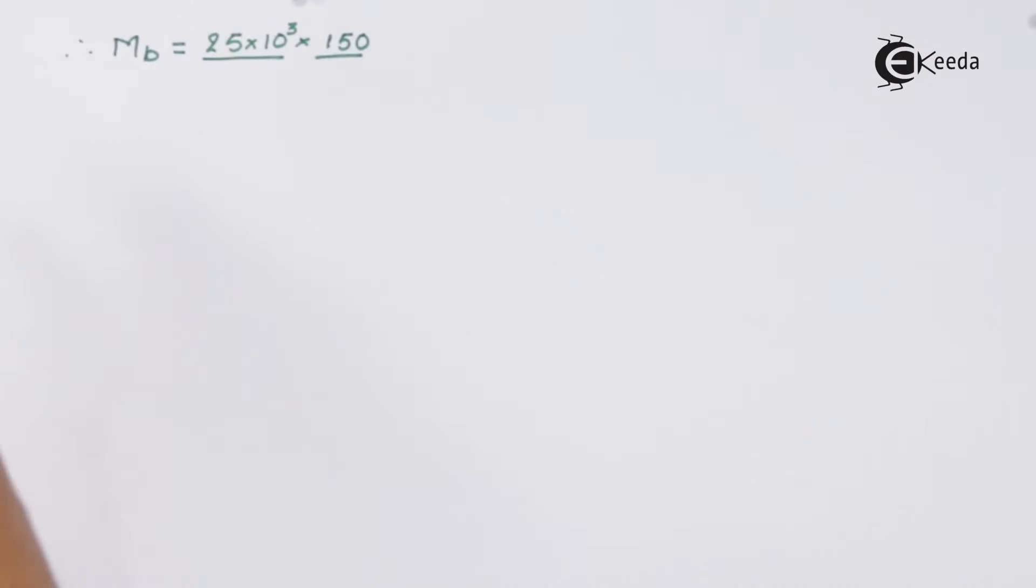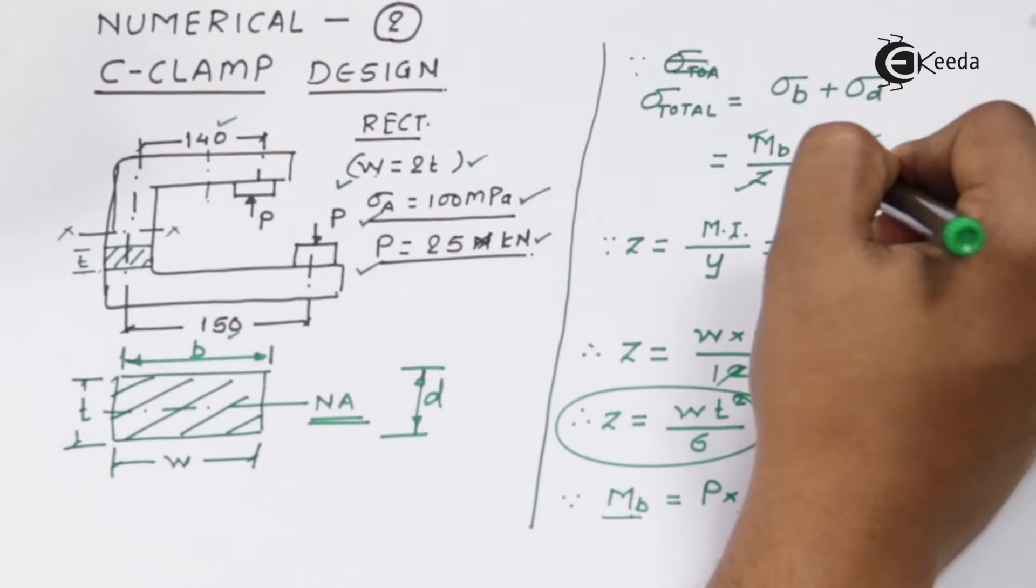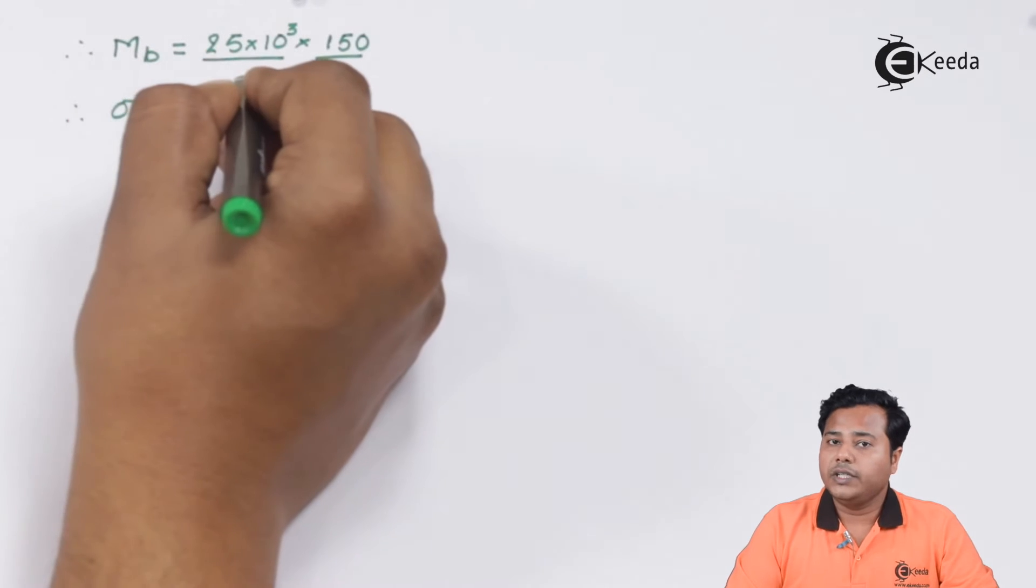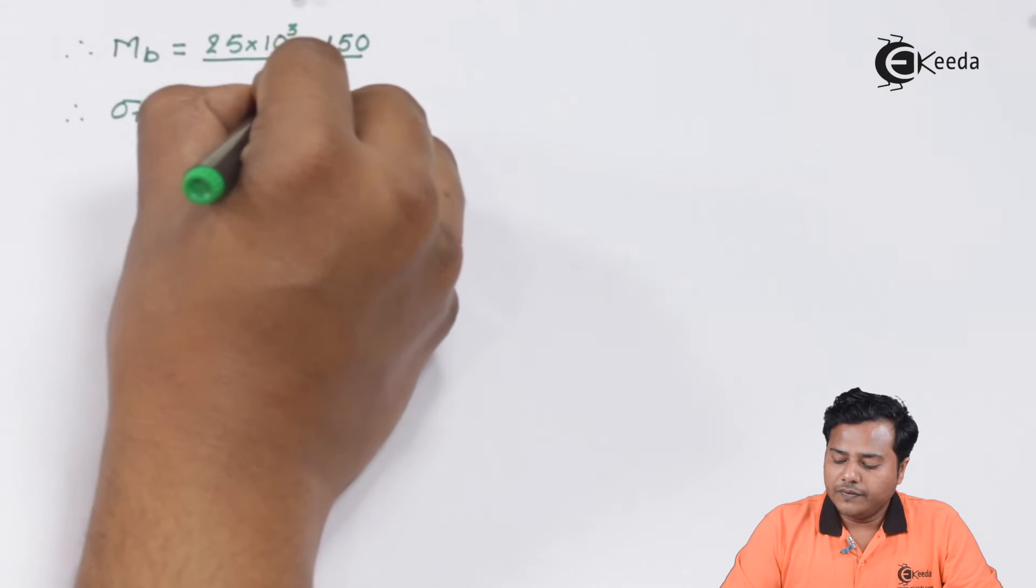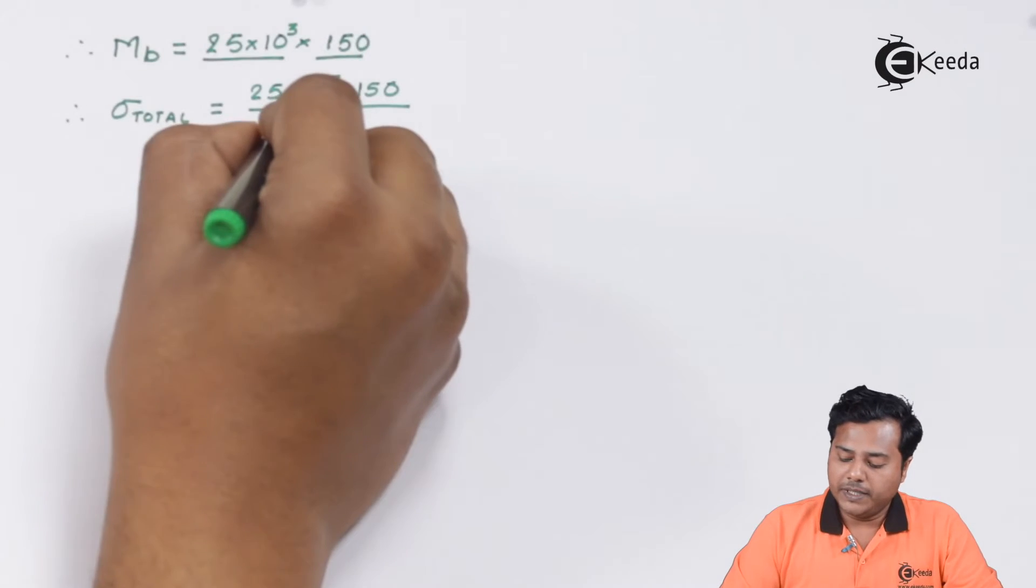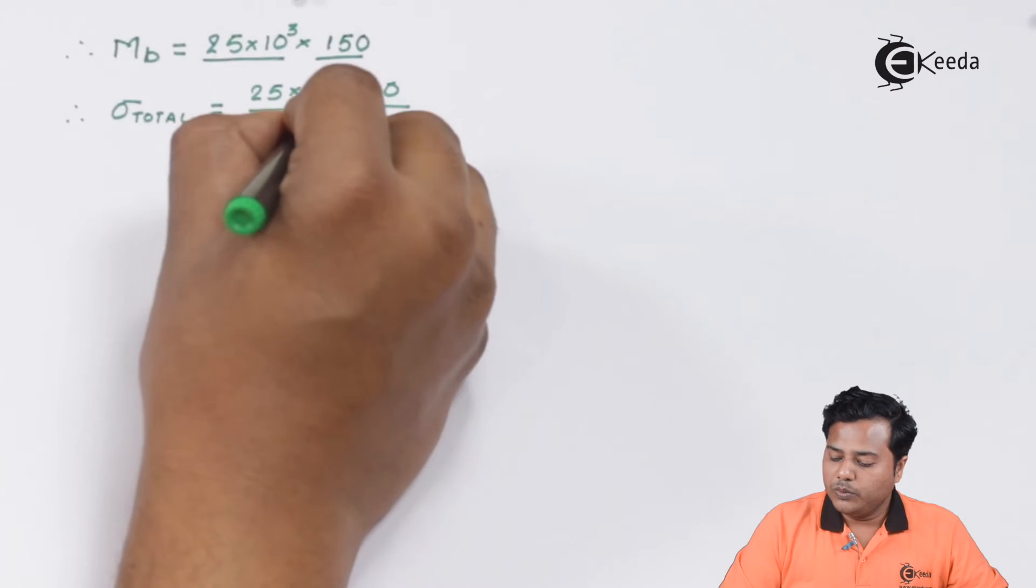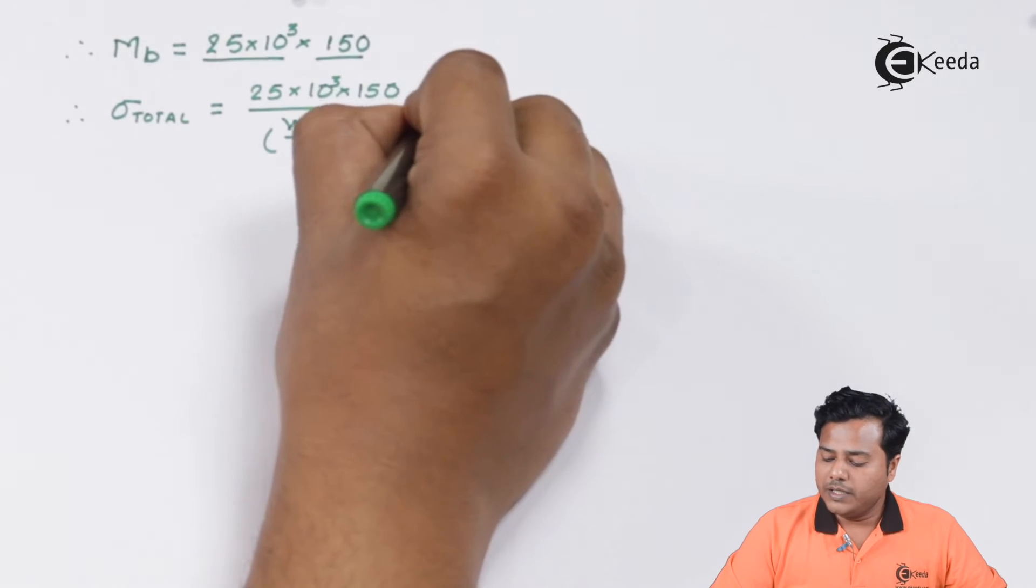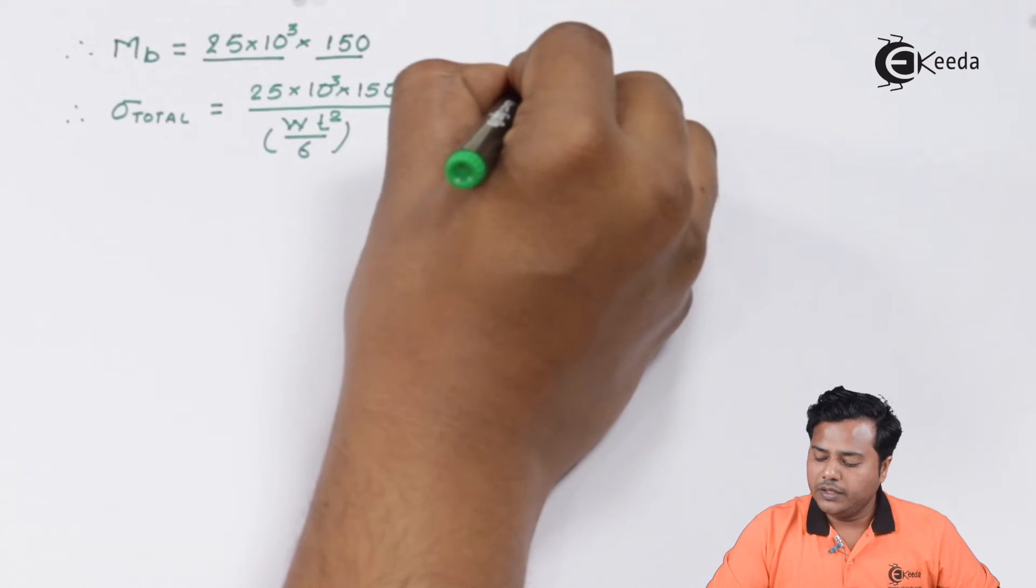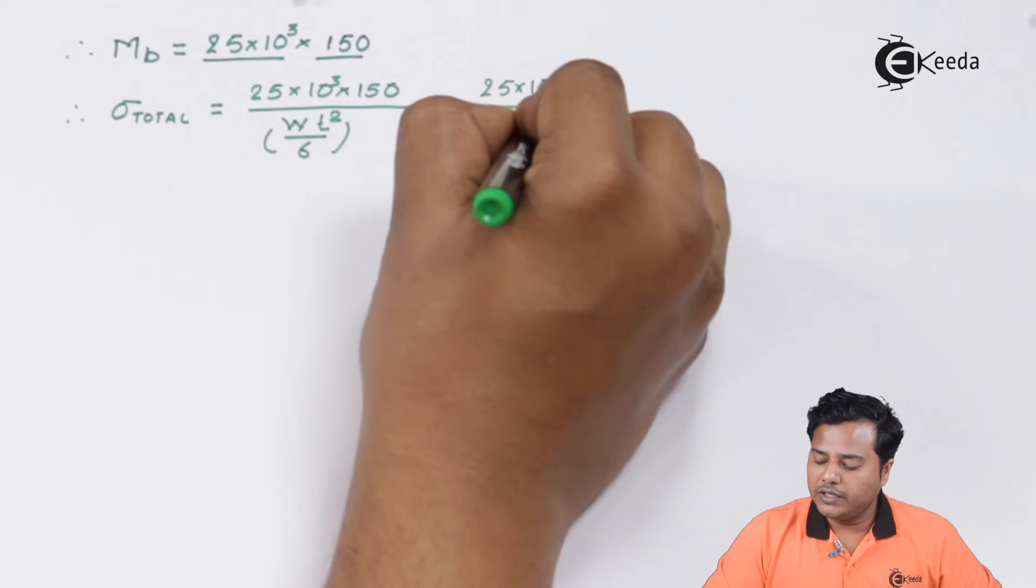Now in our formula, we have the value of MB, value of Z, value of P is known as area. So we will directly go for the sigma value. Sigma total which may act on the given body is 25×10³×150 Nmm divided by Z. The formula of Z that we had obtained was WT²/6, plus your direct stress. Your load is 25×10³ divided by area of cross section. This section itself is a rectangular section, so area becomes its width into thickness.